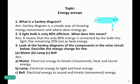Now I am starting from short questions of this chapter. Topic 1, Energy Errors. Question 1: What is a Sankey Diagram? A Sankey Diagram is a simple way of showing energy conveyance and where energy goes. It tells us which energy is useful and which is wasted.